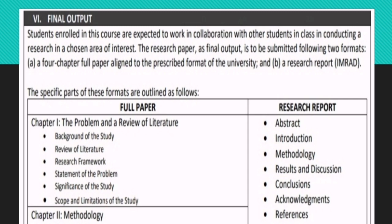In writing your research report, you are expected to have: abstract, introduction, methodology, results and discussion, conclusions, acknowledgments, and references. For your full paper, Chapter 1 — the problem and review of literature — should have a background of the study, review of literature, research framework, statement of the problem, significance of the study, and scope and limitations of the study.